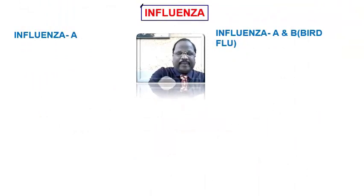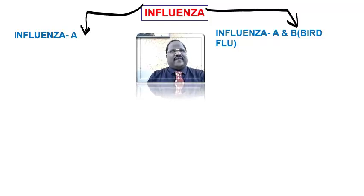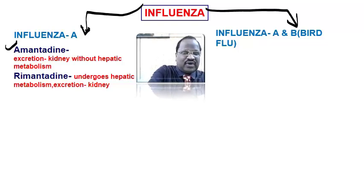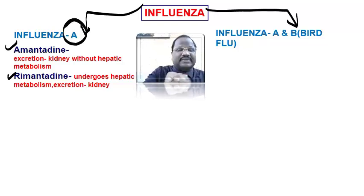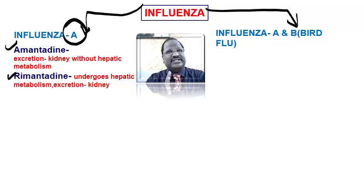There are two different types of influenza virus: influenza A virus and influenza B virus. Amantadine and rimantadine are useful only for the treatment of influenza A virus. They do not have a role in influenza B virus — that is the first important point.